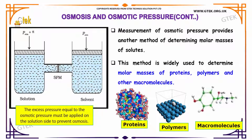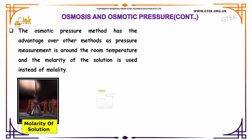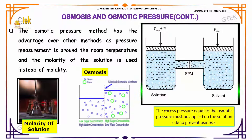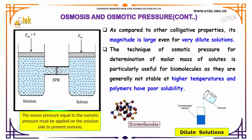The measurement of osmotic pressure provides another method of determining the molar mass of solutes. This method is widely used to determine the molar mass of proteins, polymers, and other macromolecules. The osmotic pressure method has the advantage over other methods as pressure measurement is done around room temperature and molarity of the solution is used. As compared to other colligative properties, its magnitude is really large even for very dilute solutions. This technique is particularly useful for biomolecules, as they are generally not stable at higher temperatures and polymers have poor solubility.